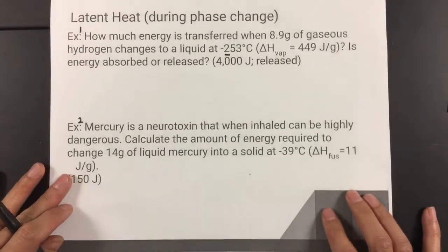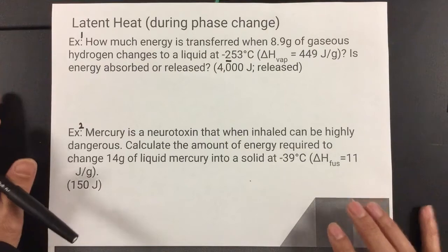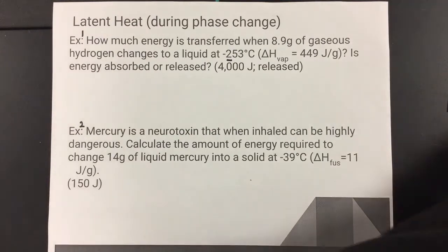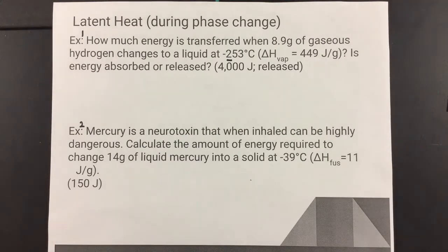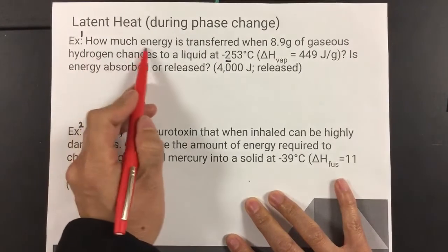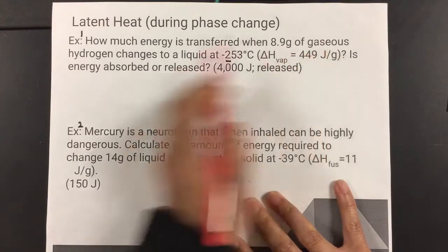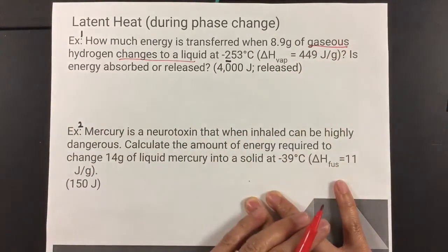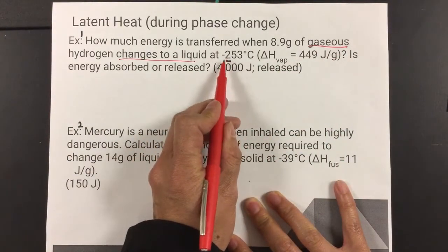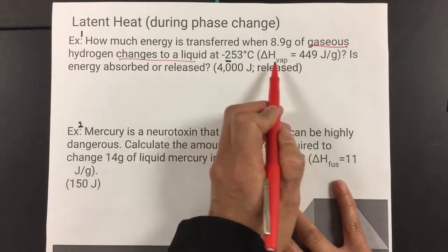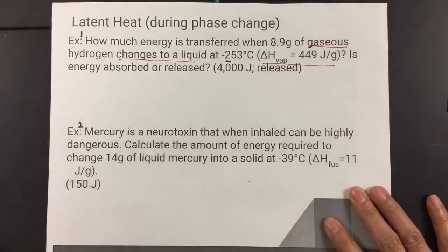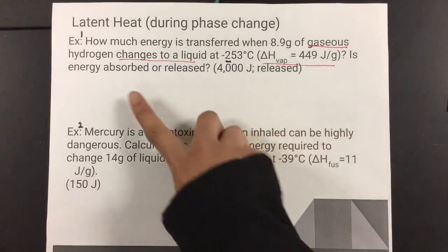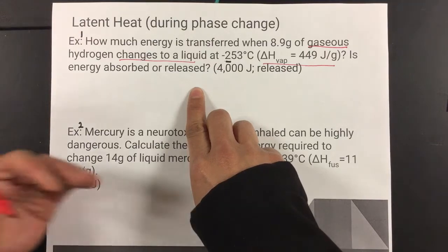So let's look at our first example. In our first example, this is called latent heat, which is ΔH. And again, it's during a phase change. So I'll note some words that will help us to identify this problem to be using Q equals m times ΔH. So it says, how much energy is transferred when 8.9 grams of gaseous hydrogen changes to a liquid? So this right here tells us that there's a phase change. And it changes at negative 253 degrees Celsius. And also, here's a big hint. The big hint is the given ΔH value for hydrogen gas. So, and then it asks, is the energy absorbed or released?